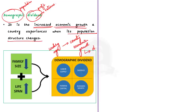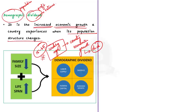An additional fact: working age population comprises people between the ages of 15 and 65. Remember this — you can use it in your mains answer. These basics will help you understand the editorial content better, and that is why I discussed all these important terms.